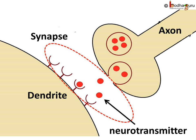Now, the impulse carried by the axon needs to be transferred to the dendrite of the next nerve. This junction between the axon of one nerve and the dendrite of the next one is called a synapse. But there is a minute gap in between. At the end of the axon, the electrical impulse sets off the release of some chemicals. These chemicals cross the gap or synapse and start a similar electrical impulse in a dendrite of the next neuron. These chemicals are called neurotransmitters.